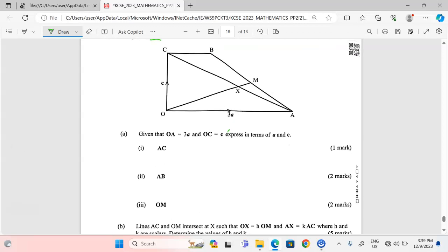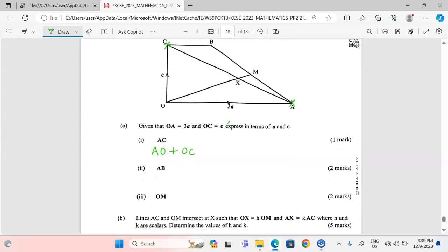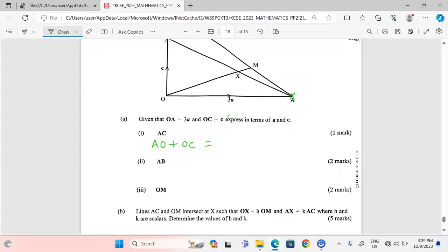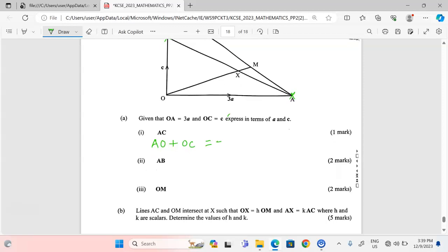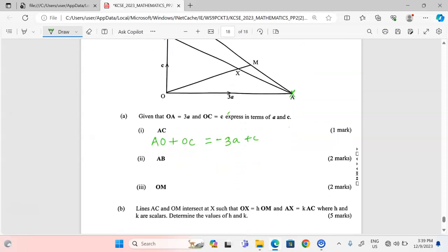For us to express vector AC, we need to follow the route AO then OC. Therefore, vector AC equals AO plus OC. Because vector OA is vector 3a, then it means AO is the reverse, which is negative 3a, plus vector c which is our OC.